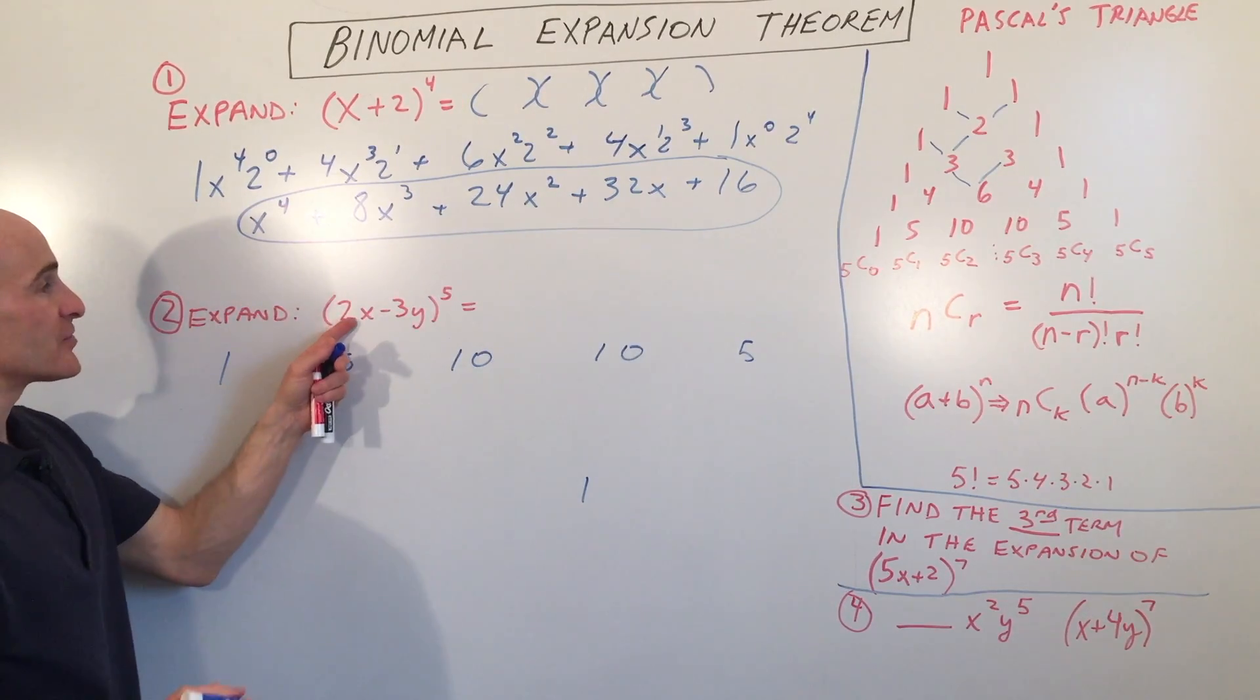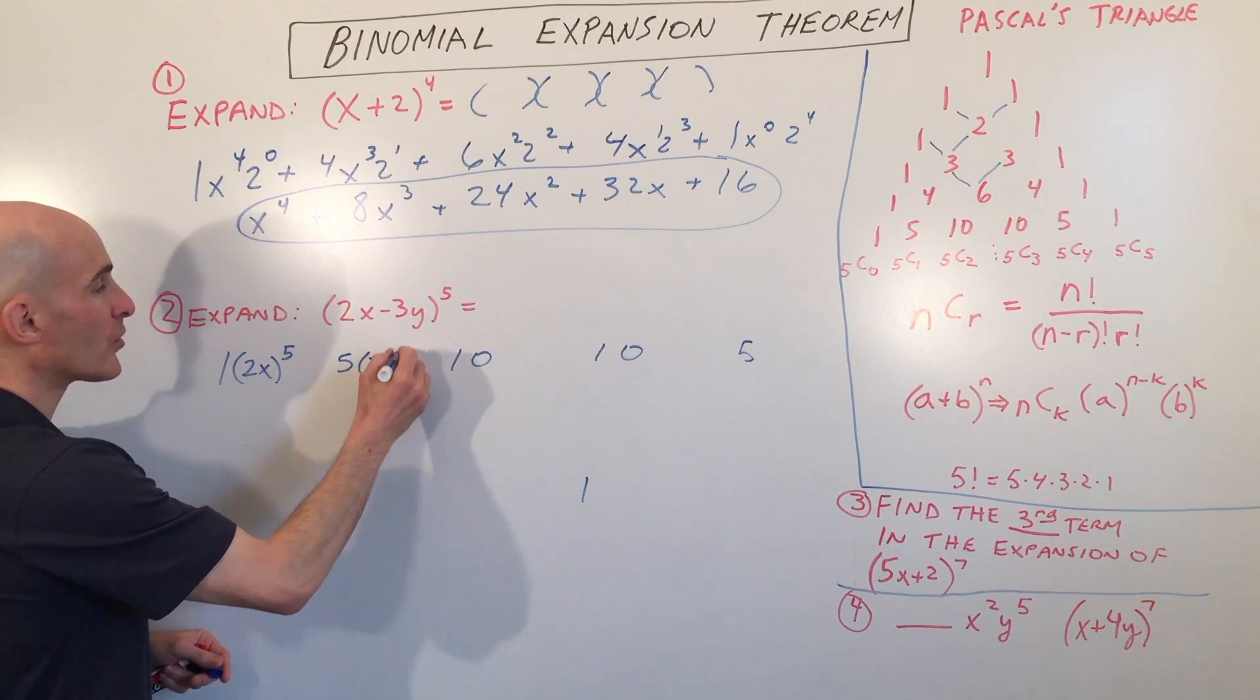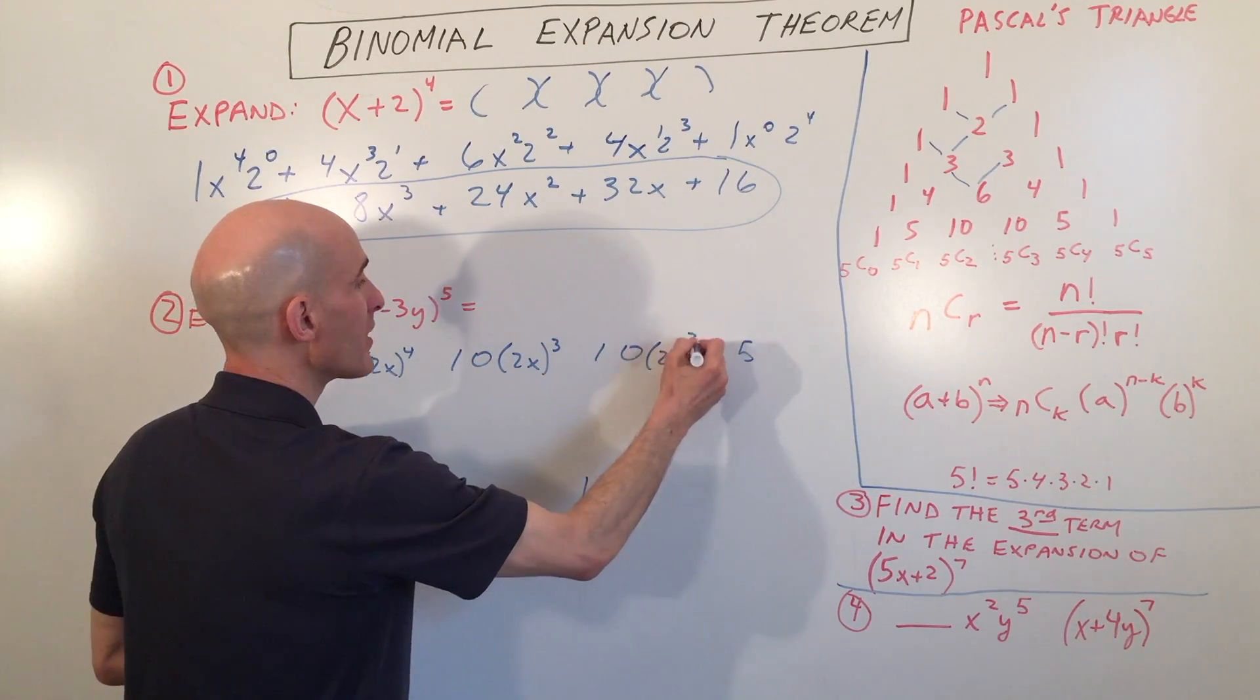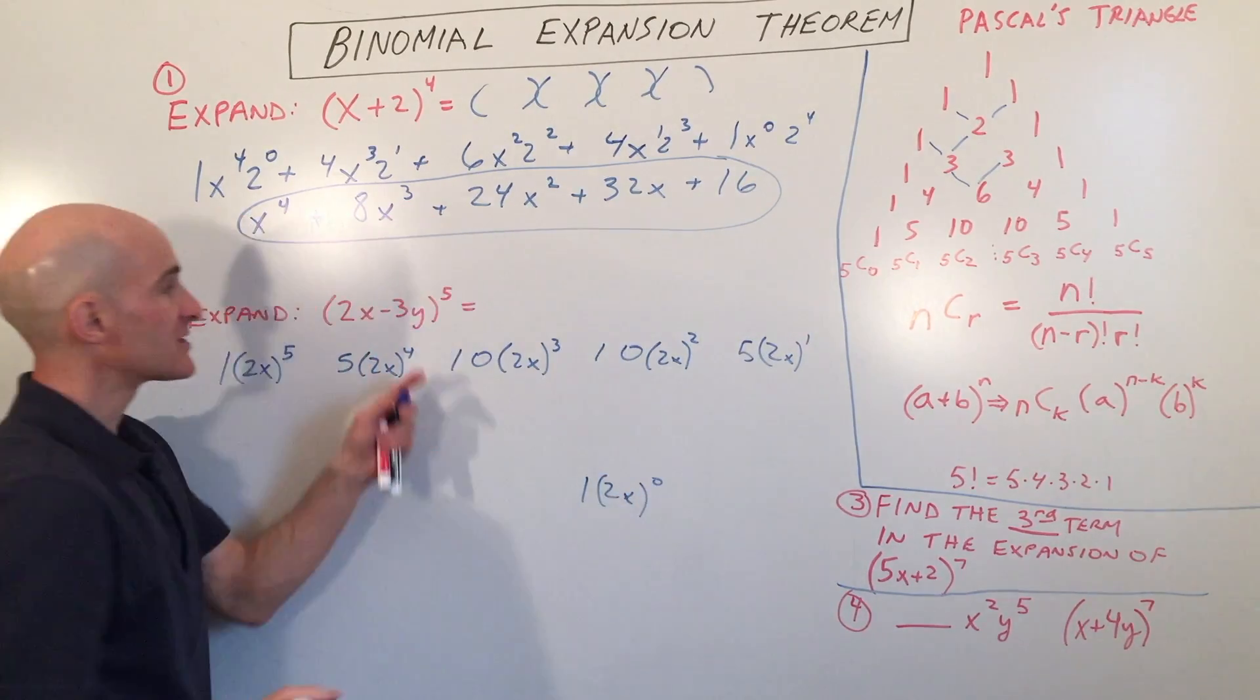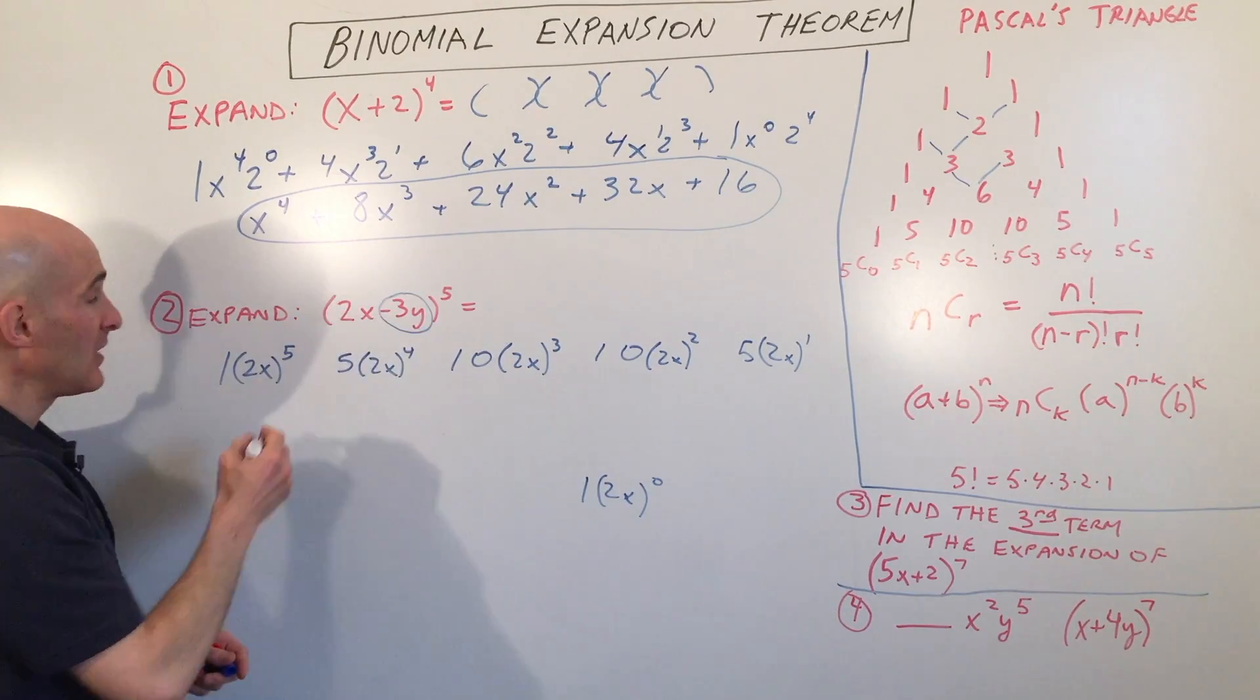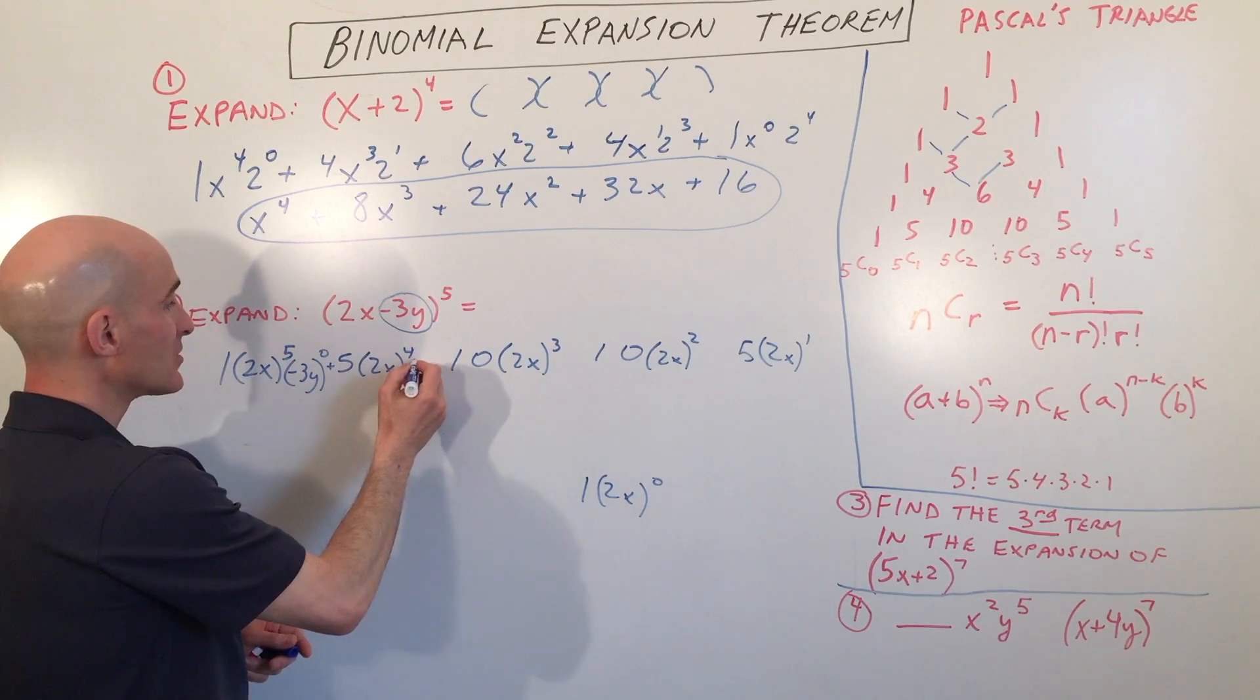And we're going to take that first term 2x. We're going to raise that to the fifth power and we're going to go in descending order. So 2x to the fifth, 2x to the fourth, 2x cubed, 2x squared, 2x to the first, and 2x to the zero. And we're going to take the second term, I'm going to take this whole thing, negative 3y, and we're going to go in ascending order. So we're going to go to the zeroth power and then we're going to go up from there. So this is going to be negative 3y to the first power.